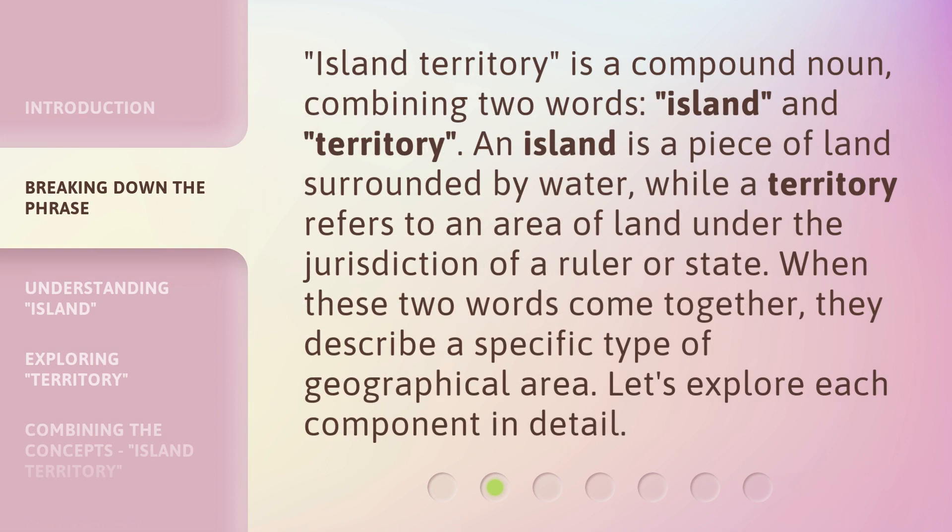Island territory is a compound noun, combining two words: island and territory. An island is a piece of land surrounded by water, while a territory refers to an area of land under the jurisdiction of a ruler or state. When these two words come together, they describe a specific type of geographical area. Let's explore each component in detail.